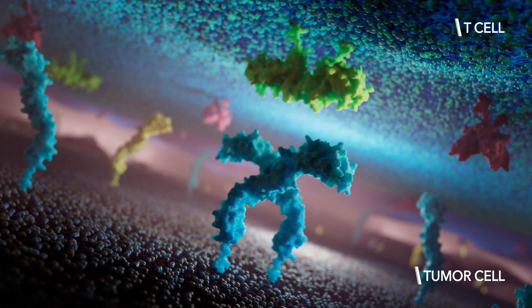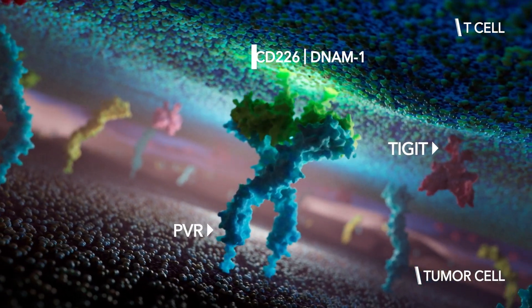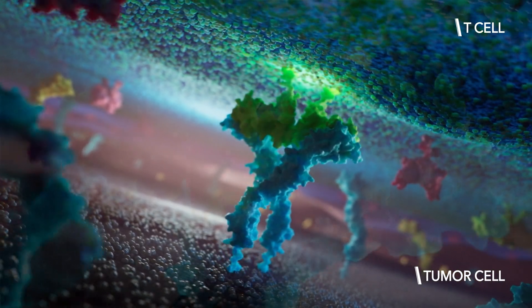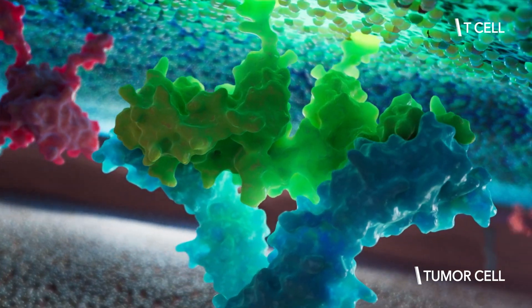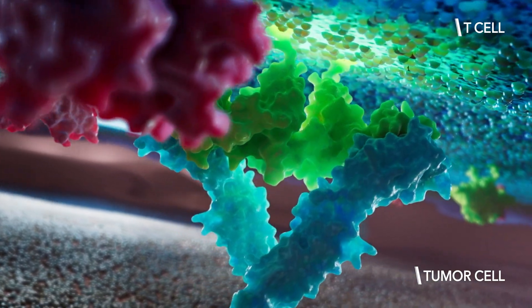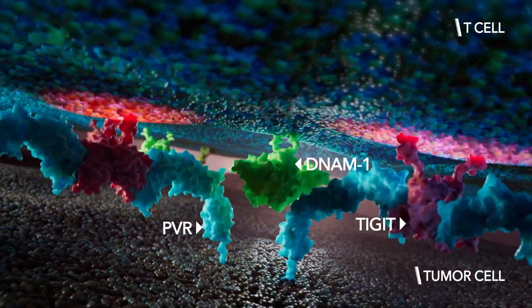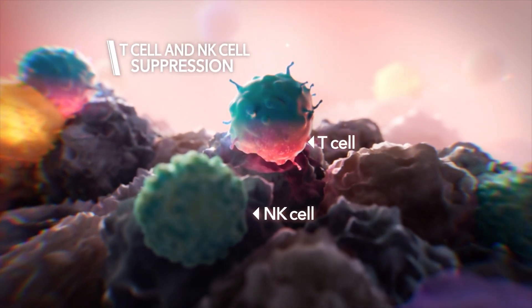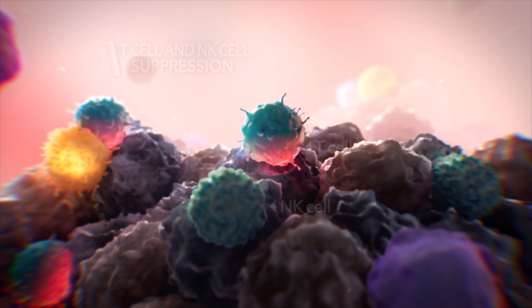Competing with TIGIT for binding to PVR and Nectin-2 is CD-226, or DNAM-1, a co-stimulatory molecule expressed by NK cells, T-cells, and monocytes that activates the immune system. TIGIT has a higher affinity for PVR than DNAM-1 does, which tips the scales towards suppression of cytotoxicity and cytokine production in both T-cells and NK cells.